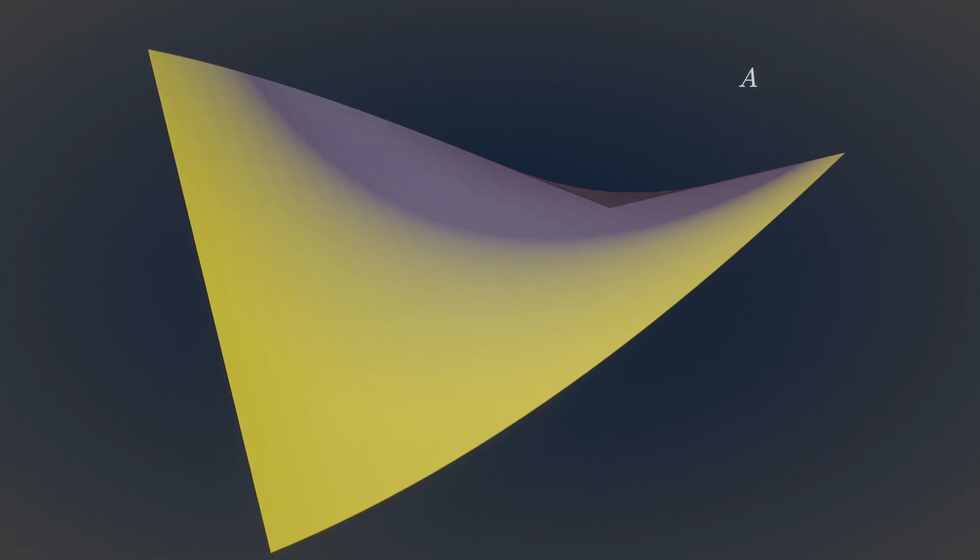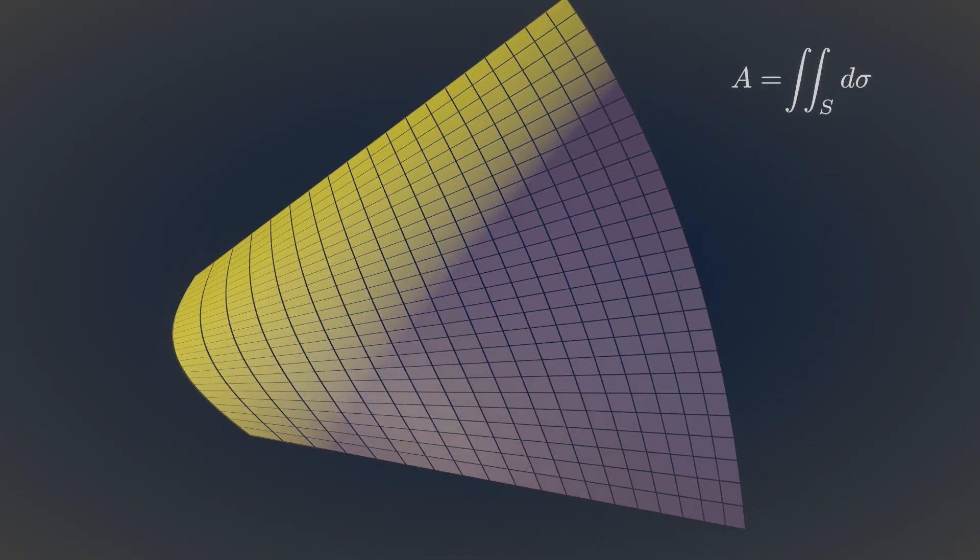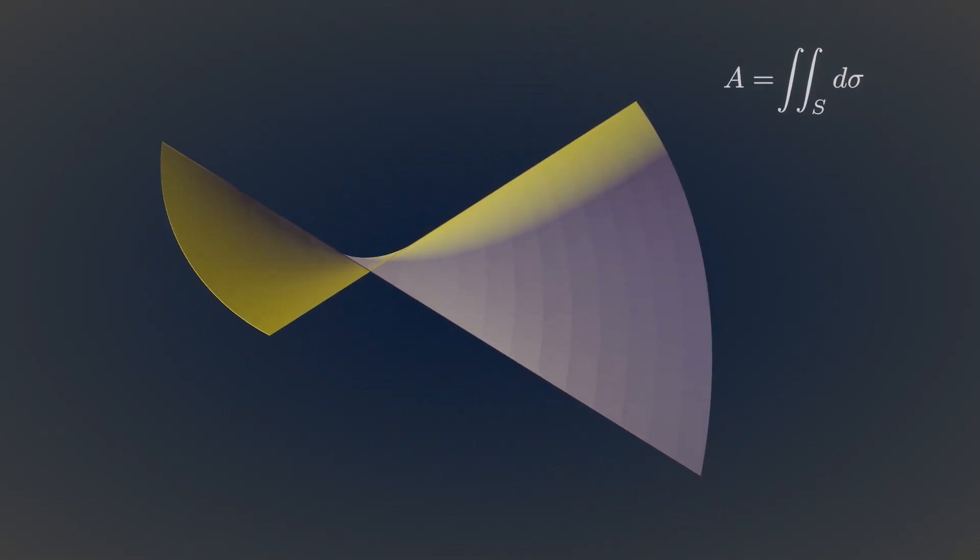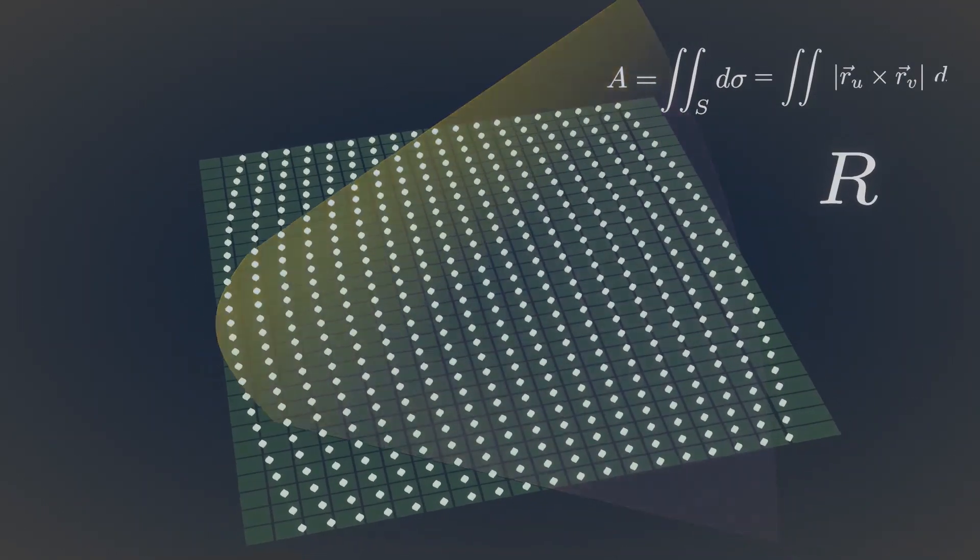We can calculate the area of any surface by summing up each of these tiny patches of surfaces. If the surface is parametrized, then we can unwrap the surface into a UV axis and double integrate the area of this plane.